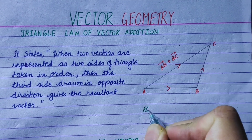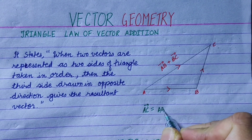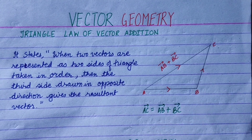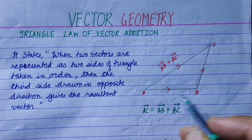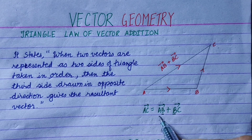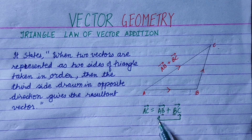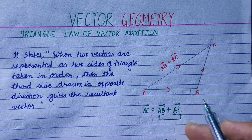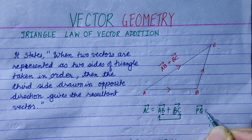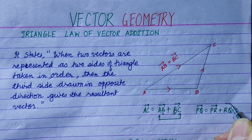The AC vector is equal to AB plus BC vector. The result is the same whether we use AB plus BC or PQ represented as PR plus RQ — the drawing and the result are the same.